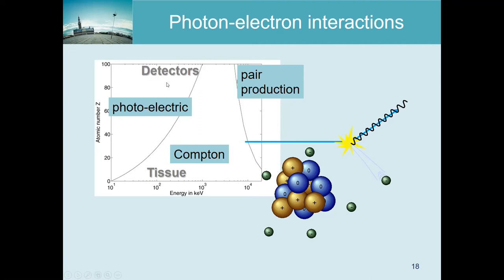In detectors we really would like to stop the photon and capture its energy, so we want very good interaction with the detector material. That is why detectors are typically very heavy - gamma cameras and PET cameras are heavy because of shielding, but also because the detector material itself must be heavy in order to work effectively.